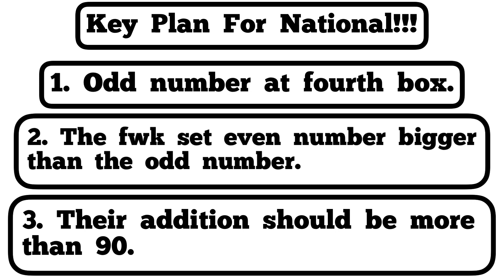Now let's go ahead and check the plan for national. A key plan is set for national lotto, and as you know every key plan has a rule that it follows. So before we just go ahead and check the plan, we need to know the rule. The plan's first rule is: an odd number will set at the fourth box winning — and by odd number, we mean example 1, 3, 5, something like that.